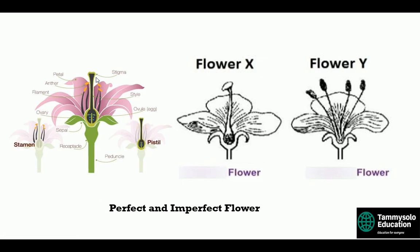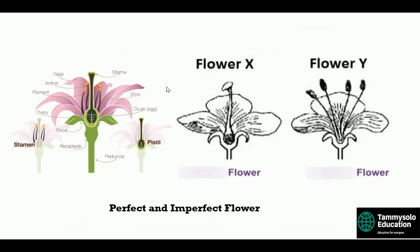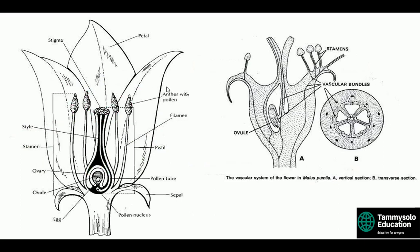As a summary: for monocots, there are usually three floral parts — the petals and sepals are in threes. For dicots, there are usually four or five floral parts — typically in fives. This difference between monocots and dicots will be used in a concluding class. Please subscribe to this channel and drop a comment in the comment section if you have any questions. Thank you and see you next class.